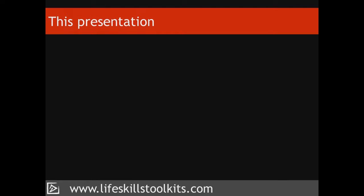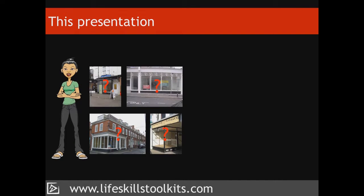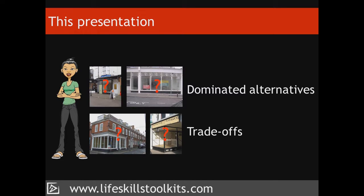In this presentation, using a case study, we will learn how to eliminate what are called dominated alternatives — situations where all of the decision objectives of one alternative are superior to those of another. We'll then learn how to make trade-offs using a technique called even swap, when not all the decisions of one alternative are superior to those of another.